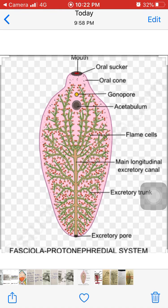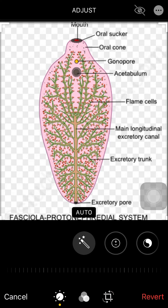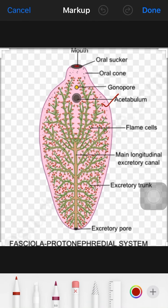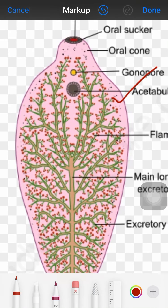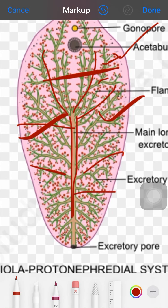The proto-nephridia also bring about osmoregulation. In summary, the pathway is: flame cells → excretory capillaries → tubules → four major trunks (two dorsal and two ventral) → main median longitudinal duct (the bladder) → excretory pore, through which waste opens to the outside. That covers the excretory system of liver fluke.